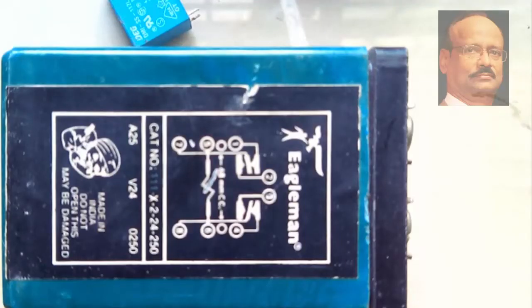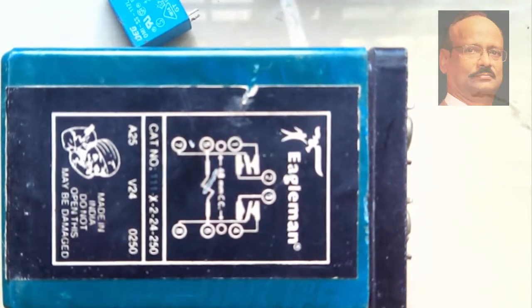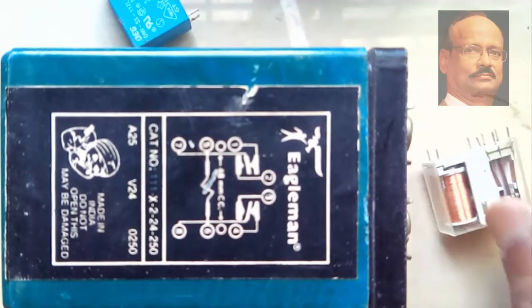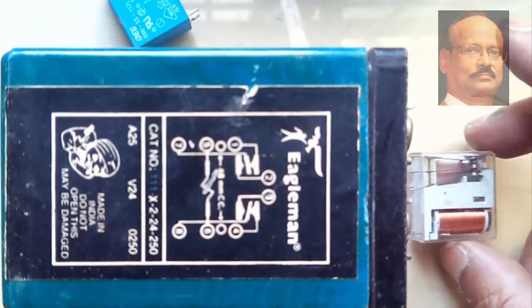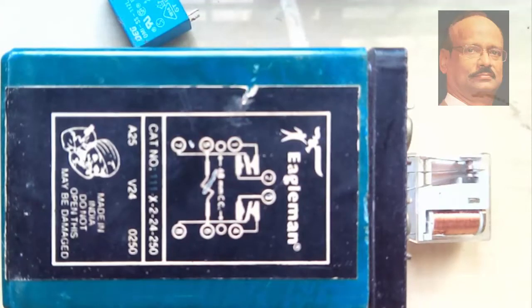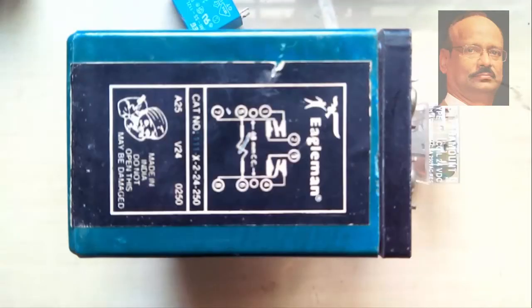Relays are also available in higher contact ratings, where more than 25 amperes or 30 amperes can be handled. These are fairly big size relays, as you can see them. And if you compare it with this, maybe a relay of this nature, you can see how they are fairly big relays as you can see from the comparison.